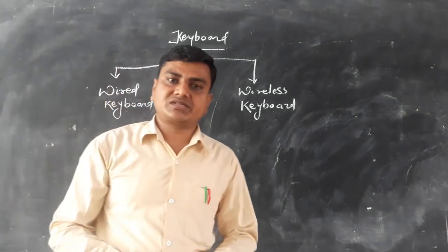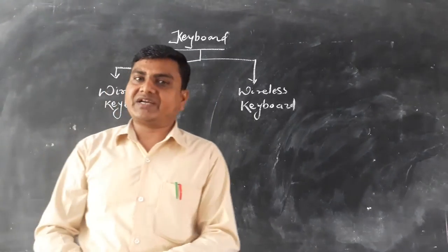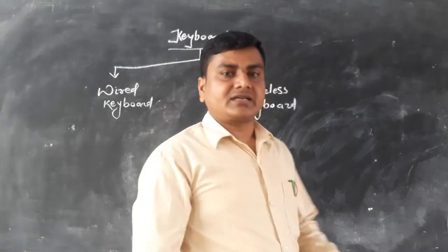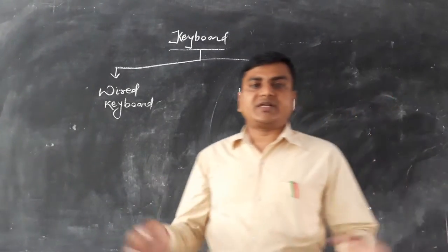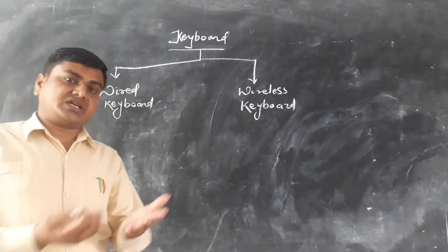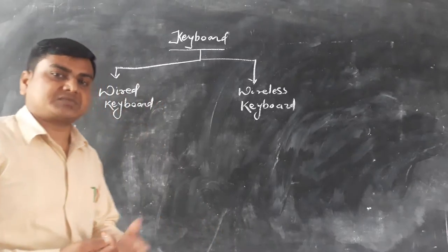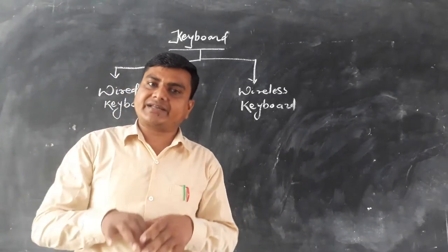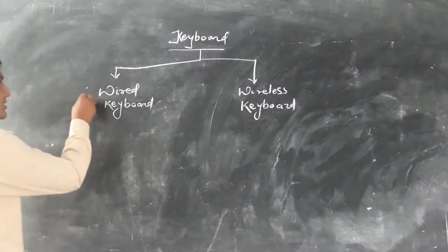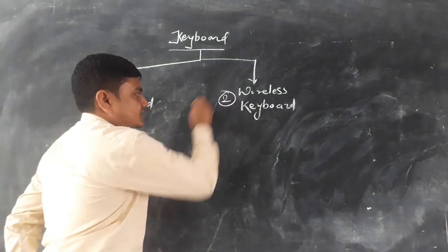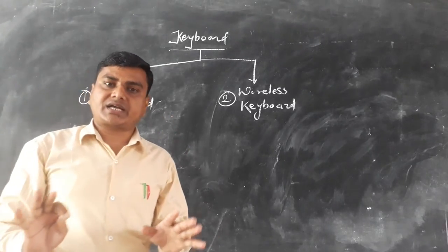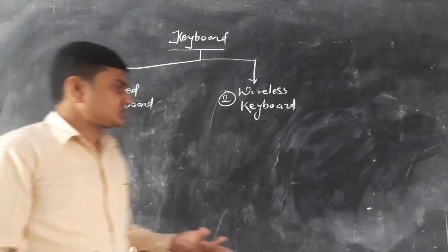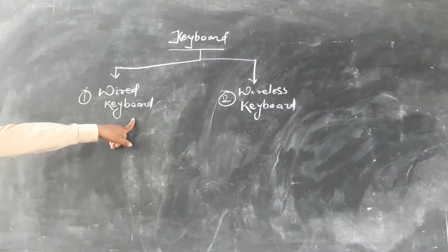You may have read in some books that keyboards are of different types — like basic keyboard, multimedia keyboard, standard keyboard, wired keyboard, wireless keyboard, optical keyboard, and so on. However, I have categorized all keyboards into just two categories: the first one is wired keyboard and the second one is wireless keyboard. In these two categories all keyboards can be explained, whether that is basic keyboard, standard keyboard, optical keyboard, and so on.